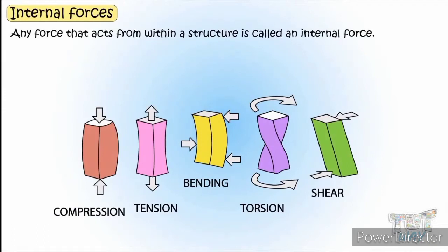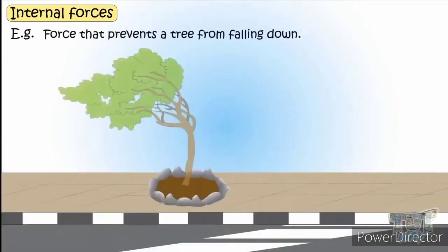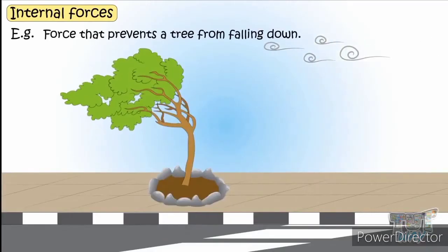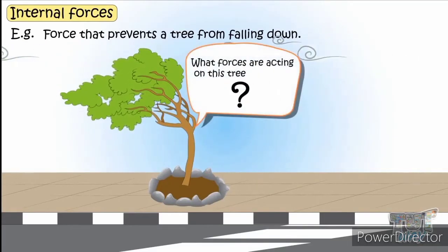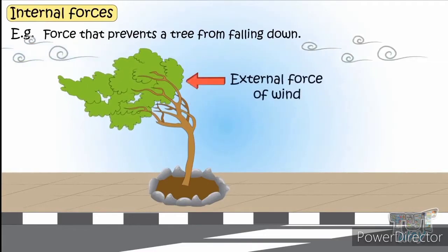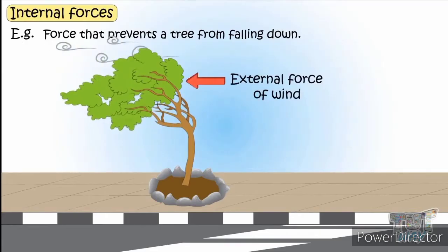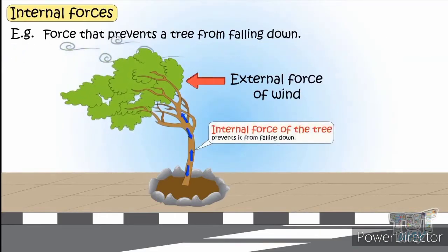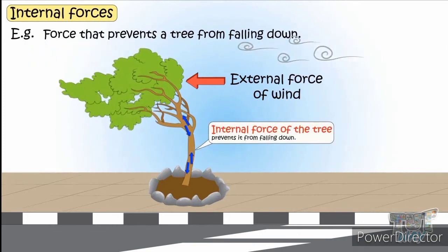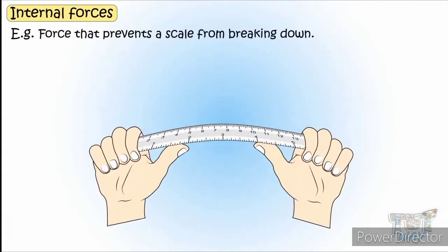Internal forces are divided into four major types: compression, tension, torsion, and shear. Consider wind pushing a tree — the tree refuses to break because there is an internal force holding it while the wind acts as an external force. When the internal force is stronger than the external force, the structure will not fail. But when the external force is greater, the structure breaks.